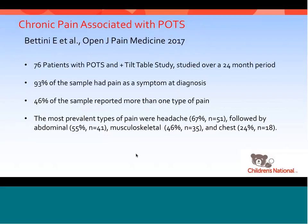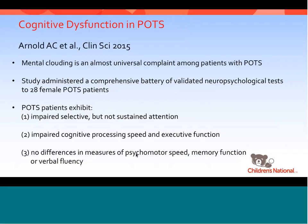Chronic pain is also common in the POTS population. Liz Bettini, one of our pain nurse practitioners, looked at 76 patients with POTS over a 24-month period. Ninety-three percent had pain as a symptom at diagnosis, and almost half had pain in one or more body regions. The most prevalent types were headache, followed by abdominal pain, musculoskeletal pain, and chest pain. Cognitive dysfunction is also common — a study from Vanderbilt looking at 28 female POTS patients showed impaired memory, impaired cognitive speed, and executive functioning.